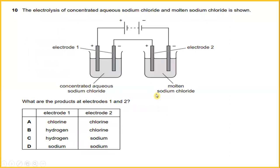The electrolysis of concentrated aqueous sodium chloride and molten sodium chloride is shown. What are the products at electrode one and two? The products of electrolysis of concentrated aqueous sodium chloride are hydrogen gas and chlorine gas. The answer is D.